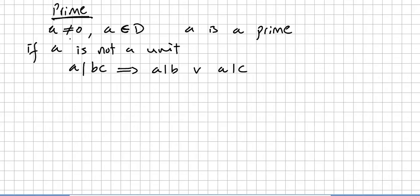A non-zero element in the domain is a prime if it is not a unit, and if A divides BC it implies that either A divides B or A divides C, where B and C are also elements in the domain.